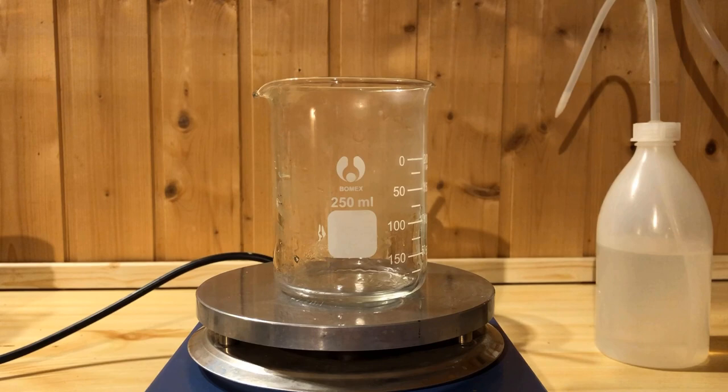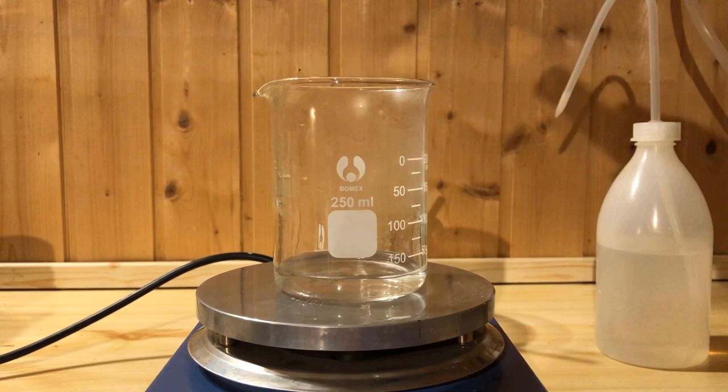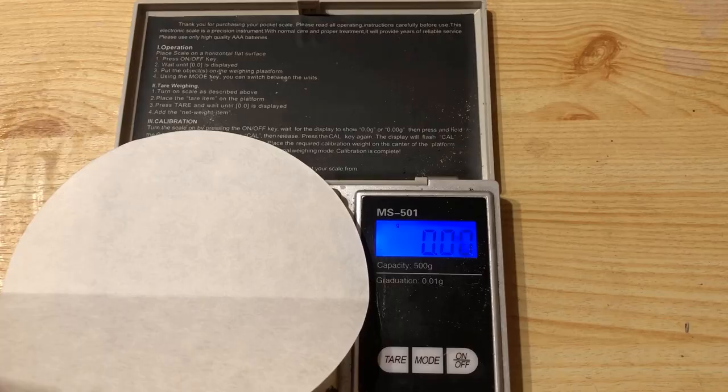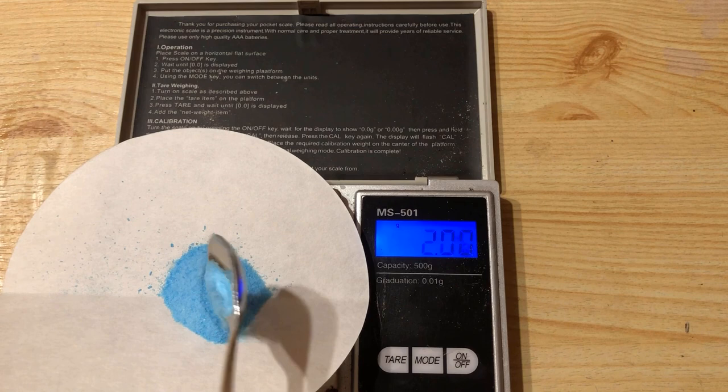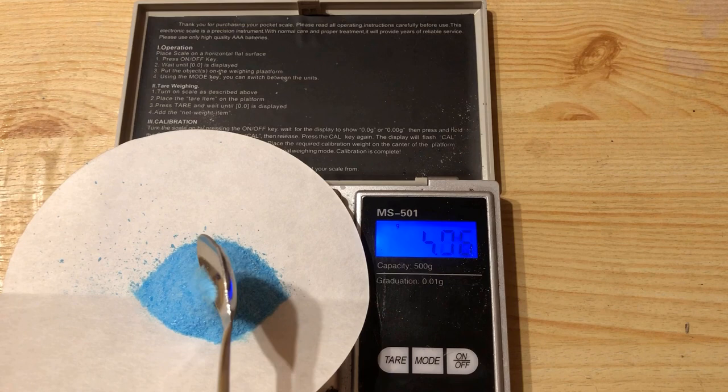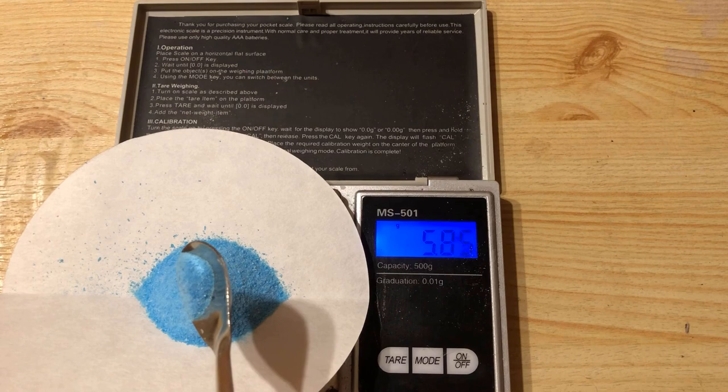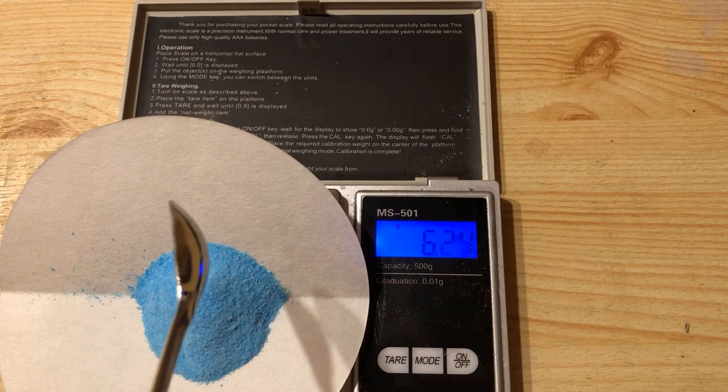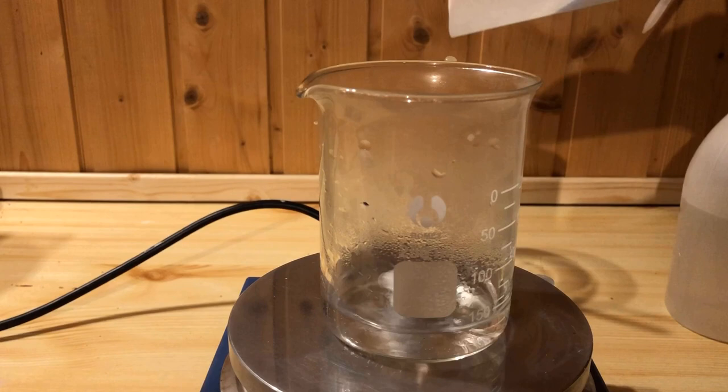A fresh beaker is placed on a hot plate with a magnetic stirrer and 20 milliliters of distilled water is heated. 6.4 grams of copper sulfate are weighed out. The copper sulfate is then dissolved in the warm distilled water.